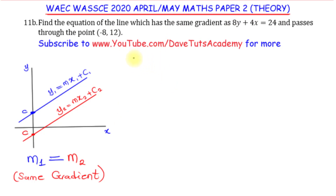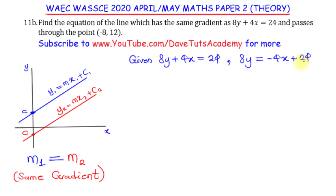For this question, we are given 8y plus 4x is equal to 24, and we want to arrange it in the form y equals mx plus c. So 8y equals minus 4x plus 24, obtained by moving 4x to the right-hand side. To get y alone, we divide the entire equation by 8, giving 8y over 8 equals minus 4 over 8 times x plus 24 over 8.